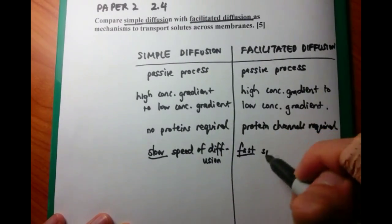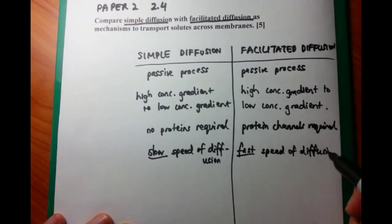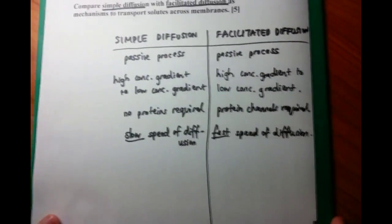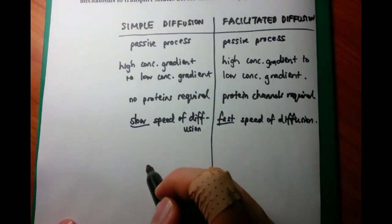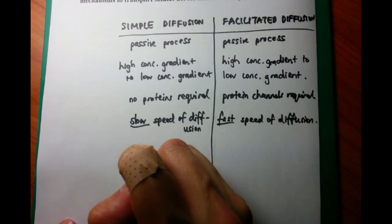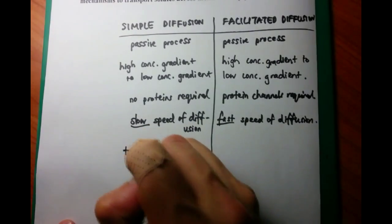Now, simple diffusion is relatively slow, whereas facilitated diffusion is relatively fast. This is because facilitated diffusion has these protein channels which are designed to move molecules from one area to another.